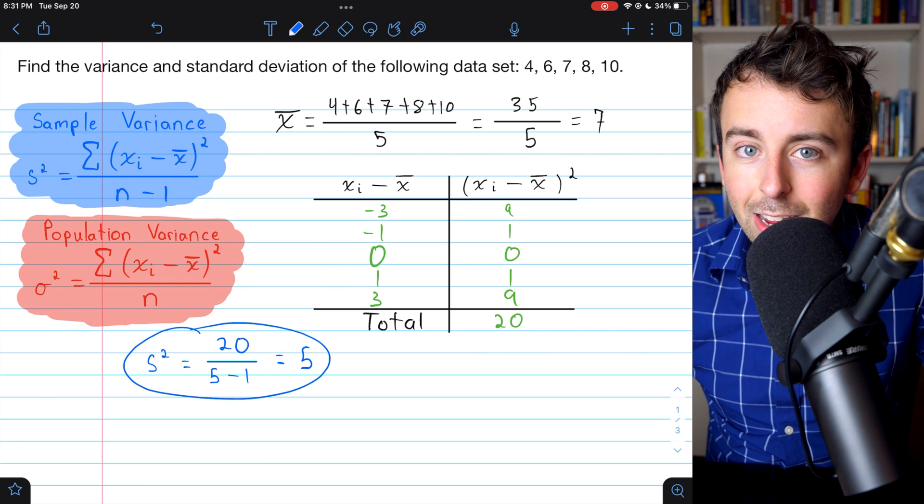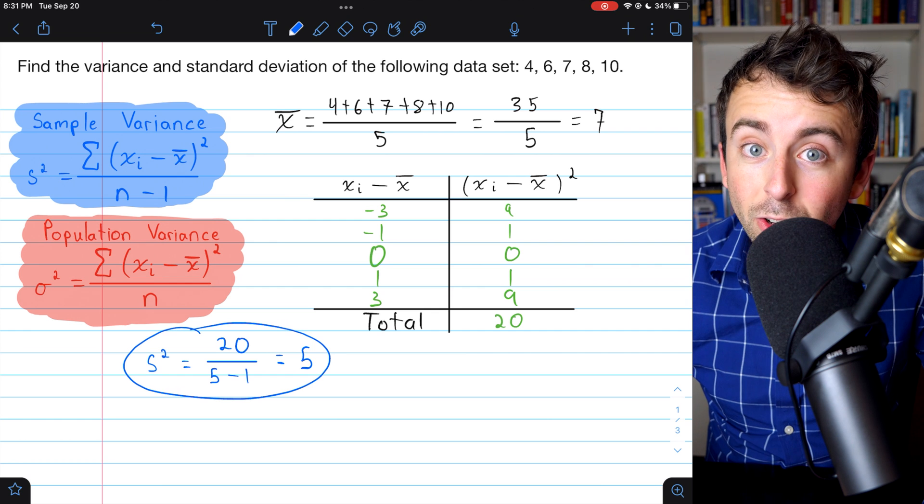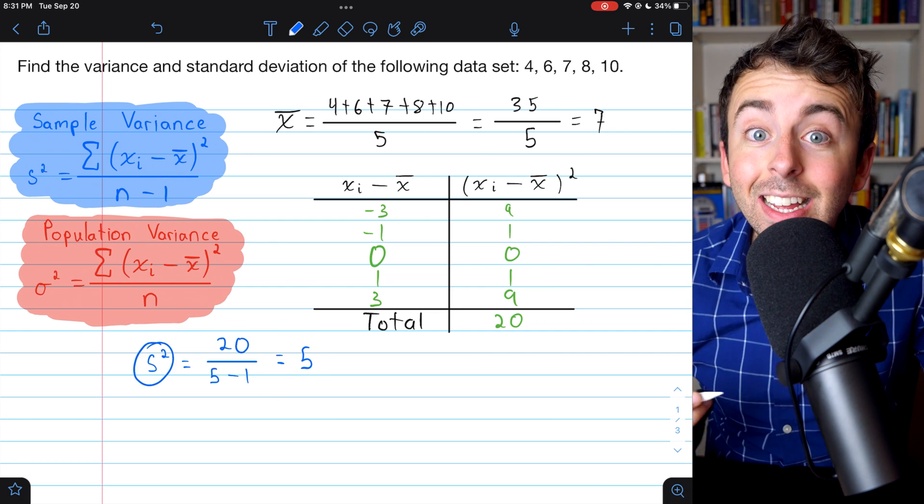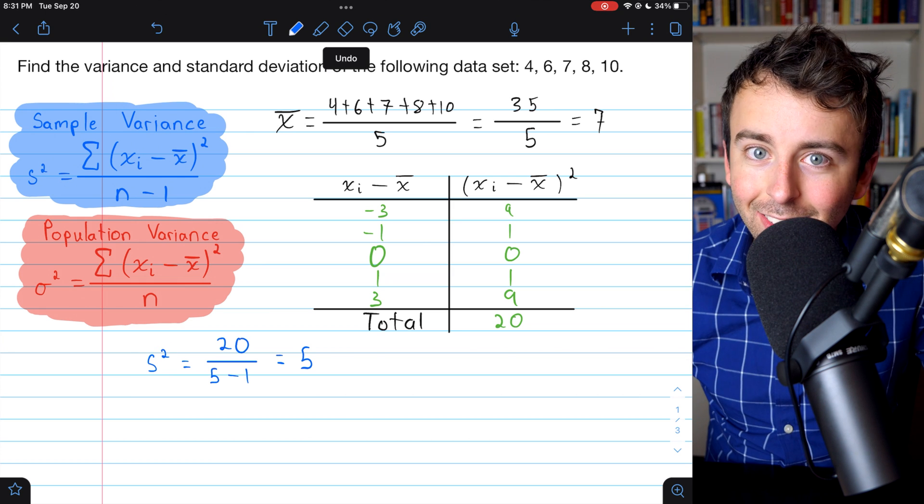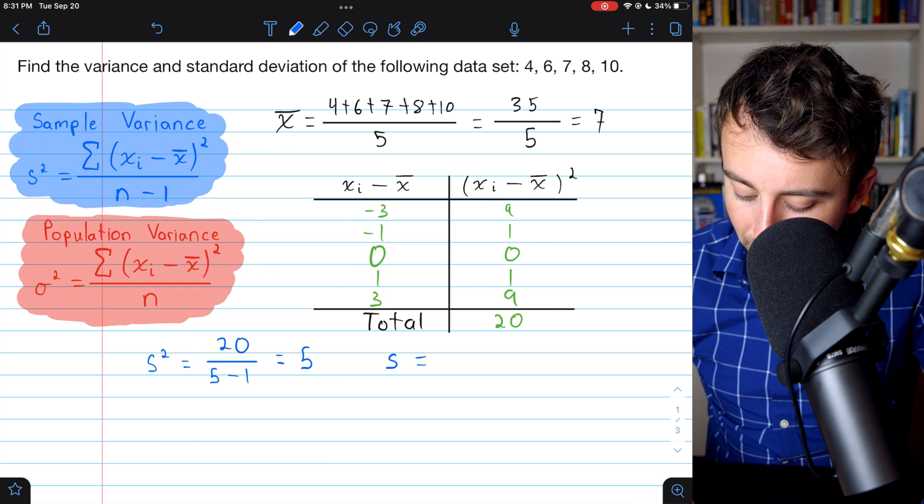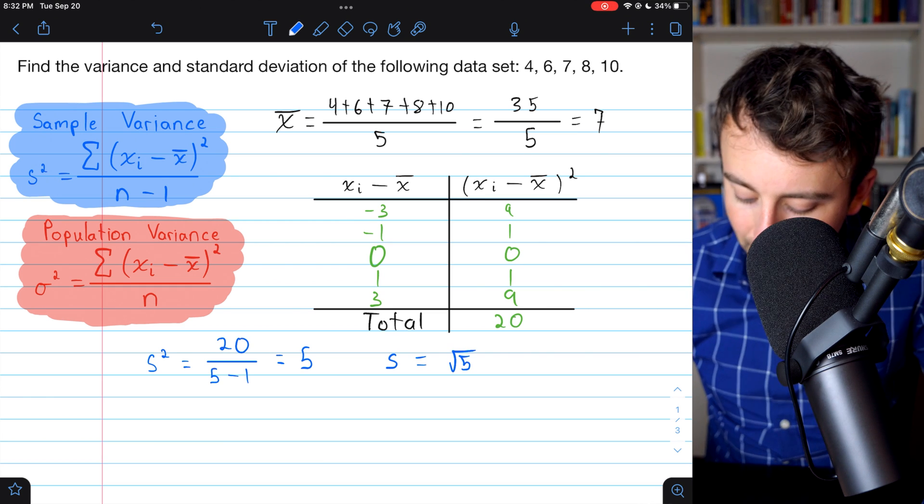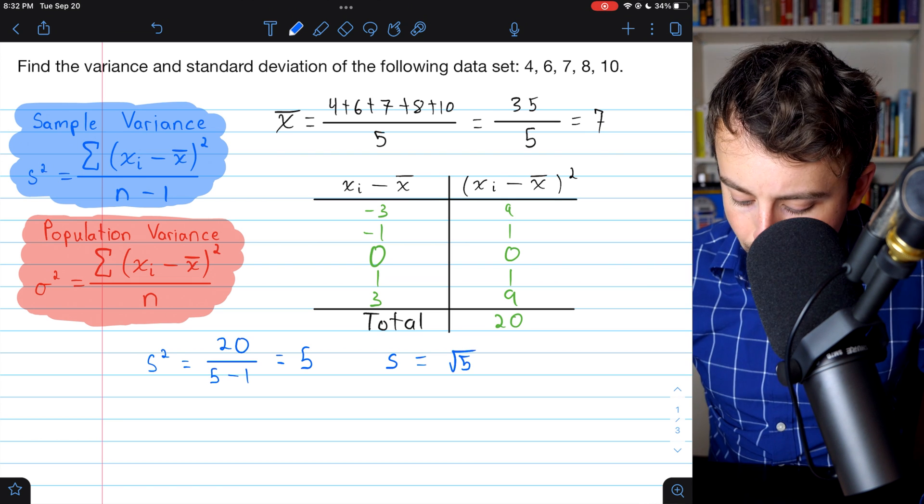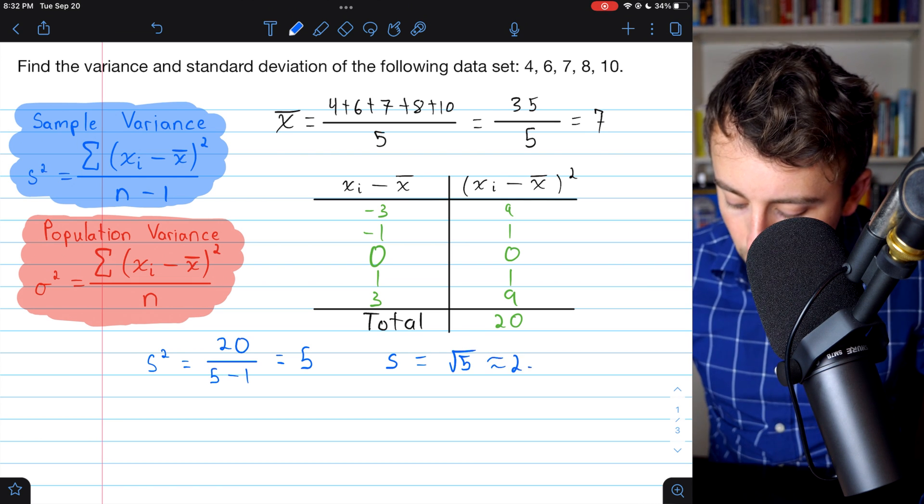Now to calculate standard deviation, well, standard deviation is just S. Sample variance is S squared. Standard deviation is just S. So to get the standard deviation, you just got to take the square root of both sides. So our sample standard deviation is square root of 5, which is about 2.24.